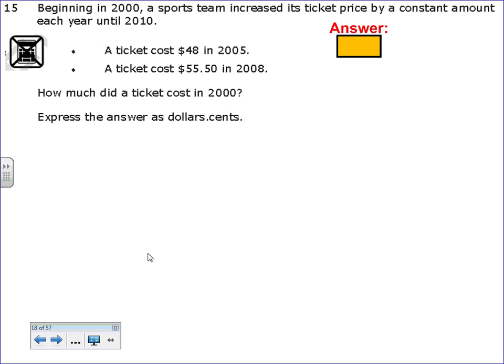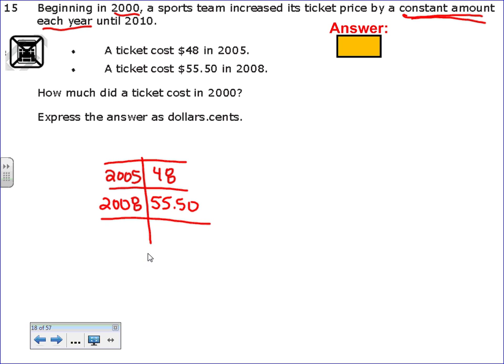Last one for this video. Beginning in 2000, a sports team increases ticket price by a constant amount each year until 2010. A ticket cost $48 in 2005 and $55.50 in 2008. I'm really into making tables, so I'm going to record this information in a table. 2005, it was $48. In 2008, it was $55.50.